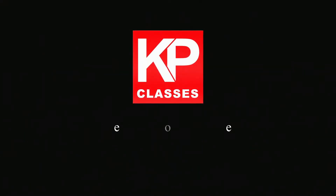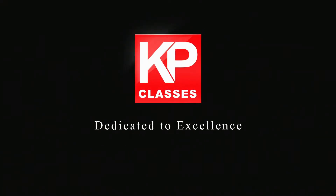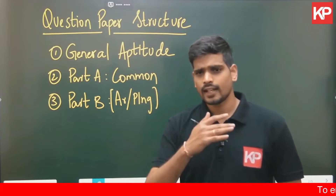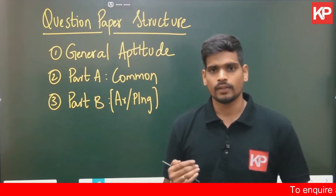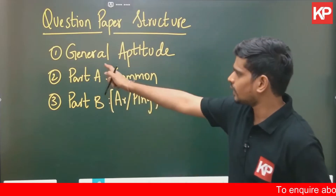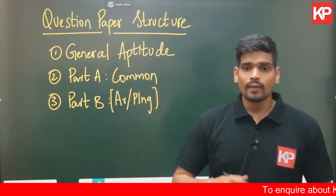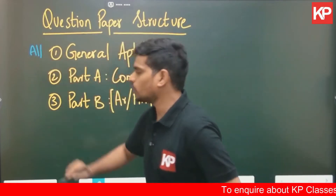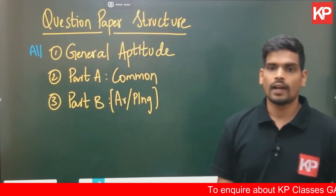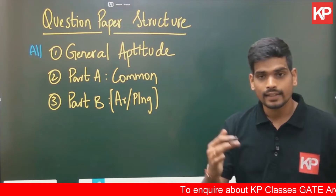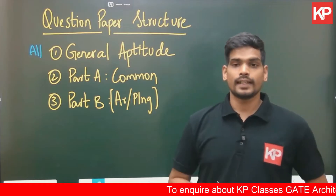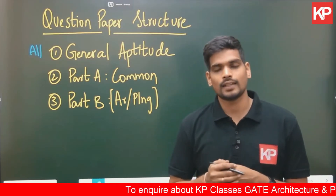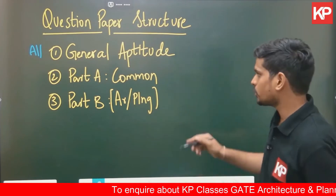KP Classes, dedicated to excellence in gate architecture and planning. There are three parts in the question paper. The first part is compulsory for everyone — all students attempting the GATE examination must answer it. That is General Aptitude.